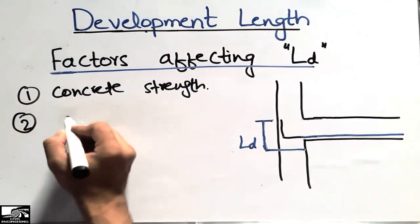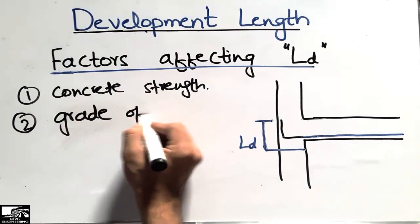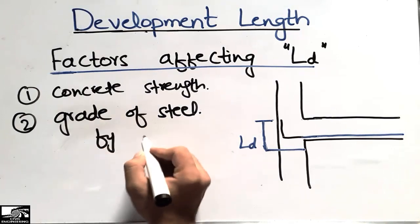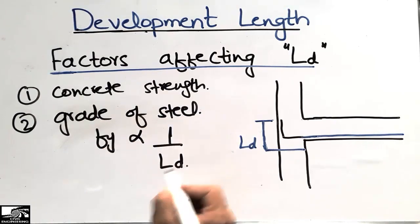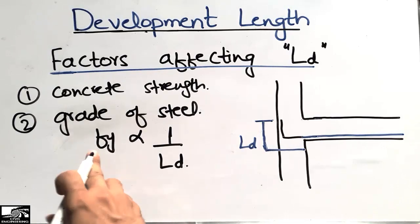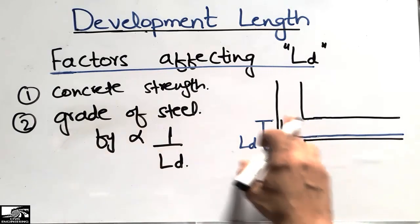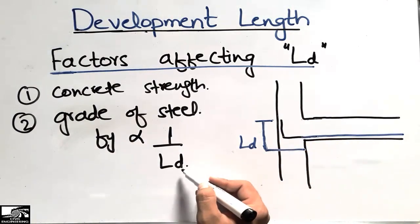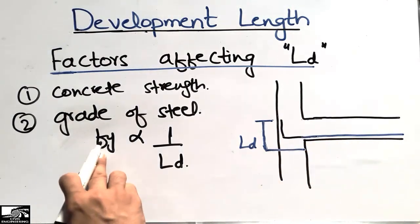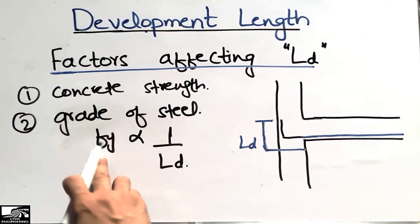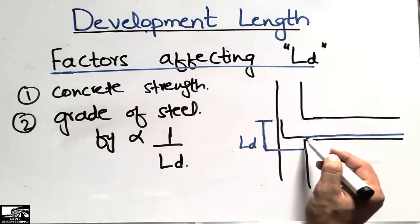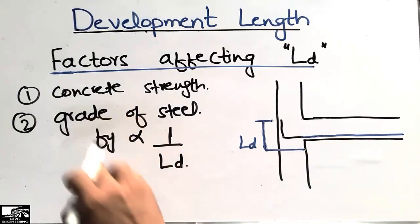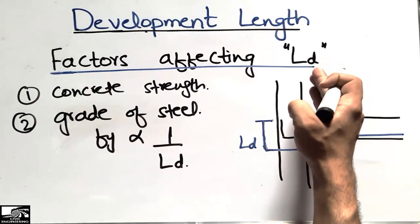The second factor affecting development length is the grade of steel (fy). Grade of steel also has an inverse relation with development length. If a high grade of steel is used at the beam-column joint, we require less development length. Similarly, if a lower grade of steel is used, we require more development length.